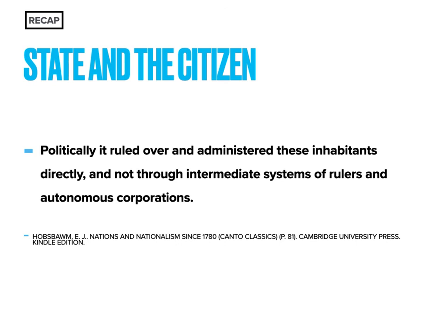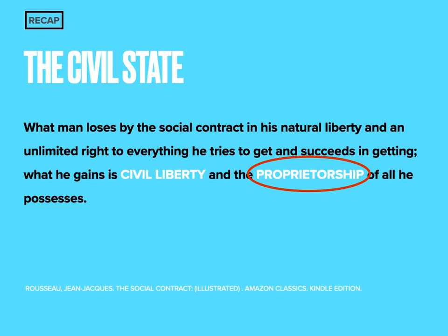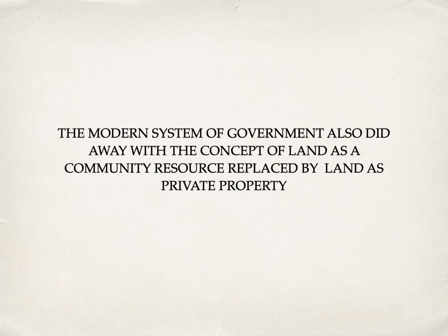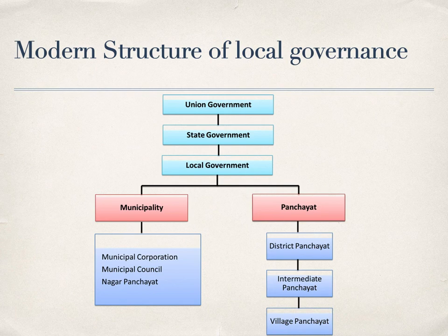Let's do a quick recall of the modern political structure. The modern state dealt with each individual without any intermediate systems. Therefore, proprietorship also became essentially individual. The modern system of government also did away with the concept of land as a community resource, replaced by land as private property. However, the benefits of local governance cannot be ignored. The 73rd and 74th Amendments of the Constitution mandated the creation of municipal corporations and panchayats as representative local bodies within a democratic structure of government.